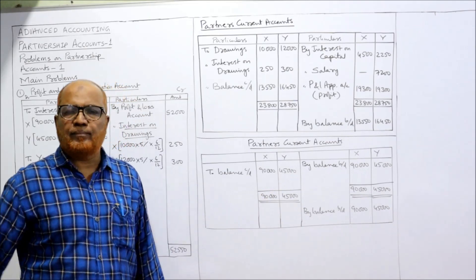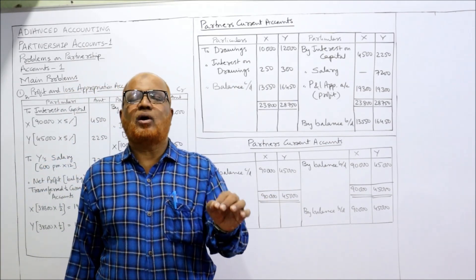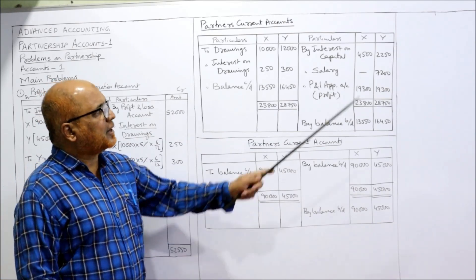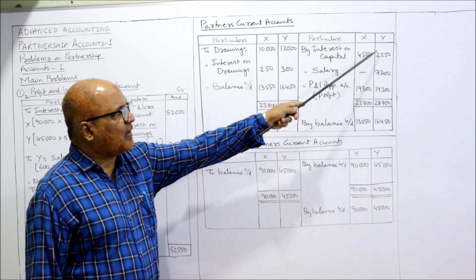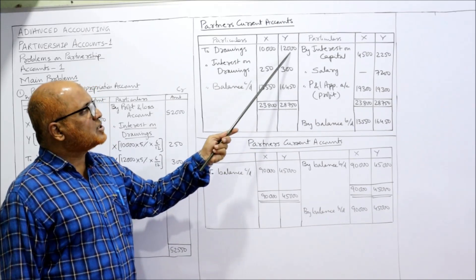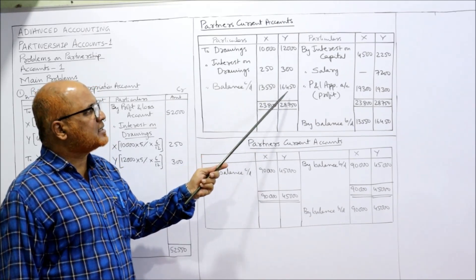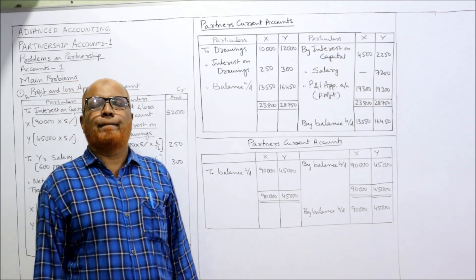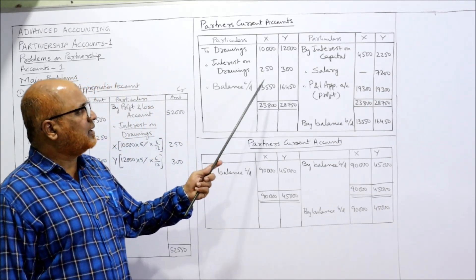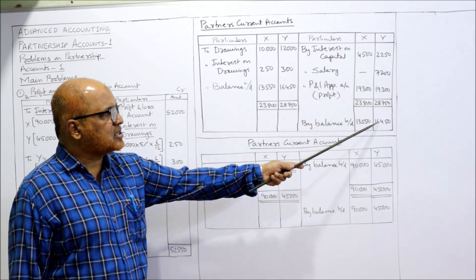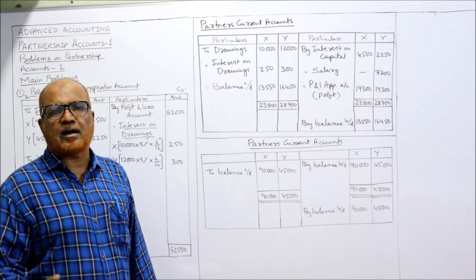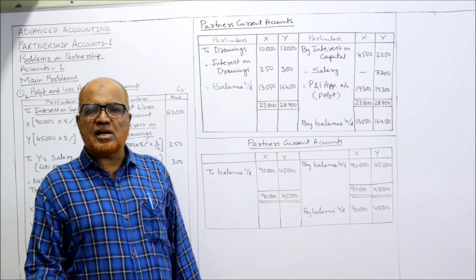Similarly, for Y's current account: credit side total is 28,750. Subtract: 28,750 − 12,000 − 300 = 16,450. This is the closing balance in Y's current account, carried down and brought down. That completes the current account for both partners.